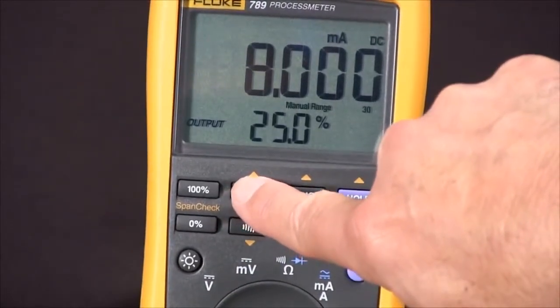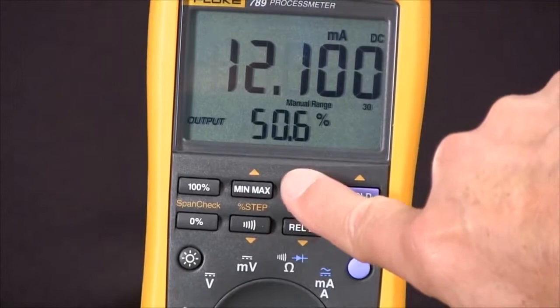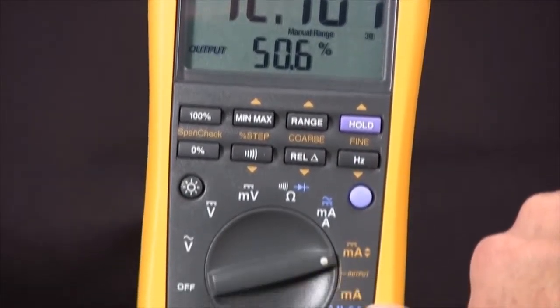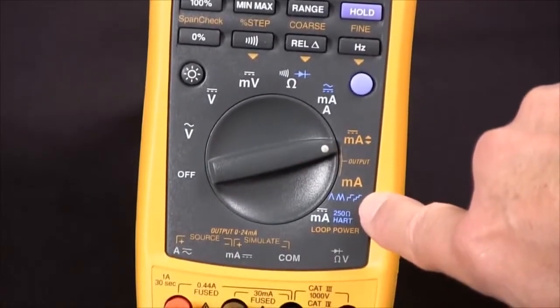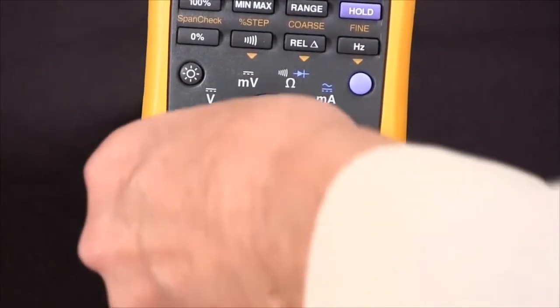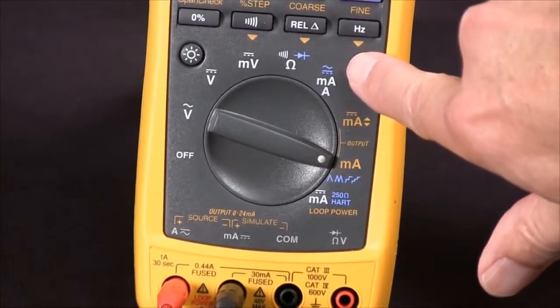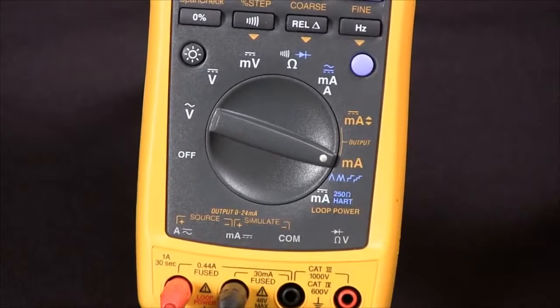If we need to do automatic ramping or step functions, we can go here to the other sourcing position. And with the blue key we can select one of those four.